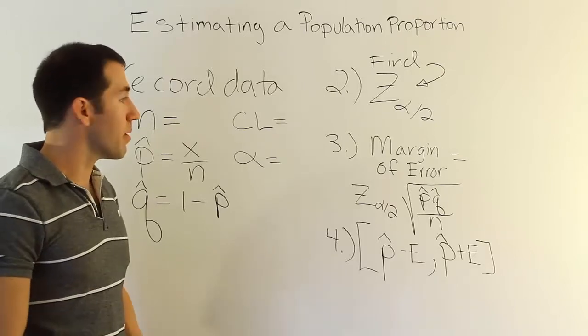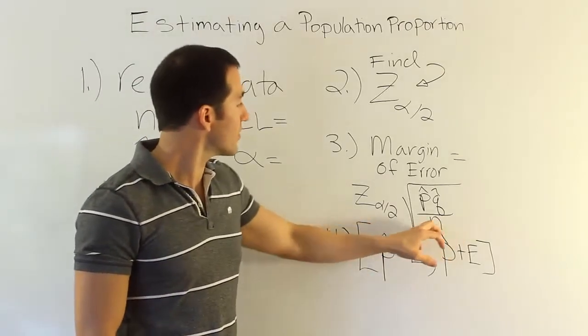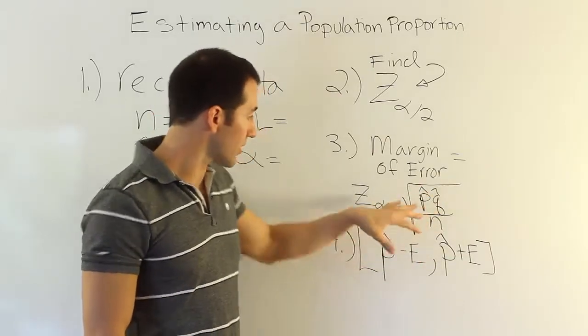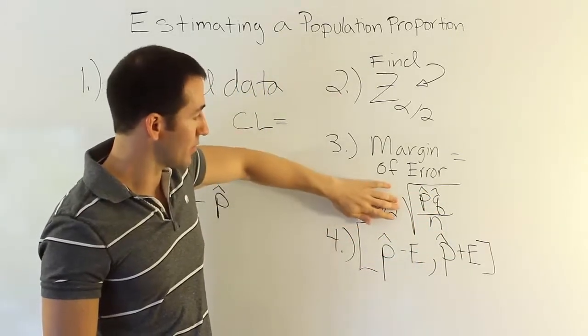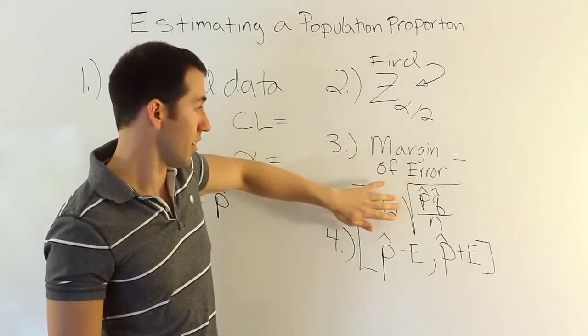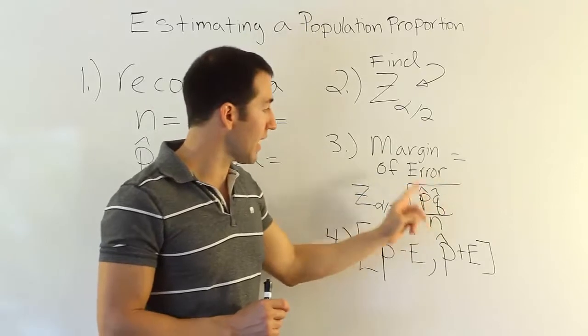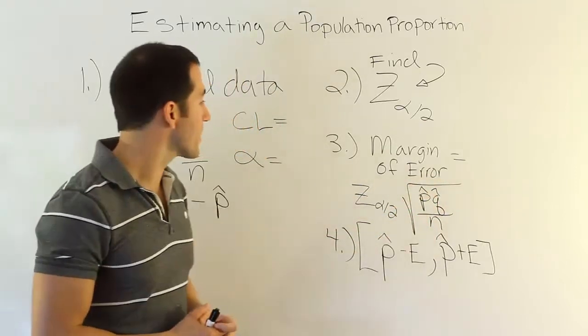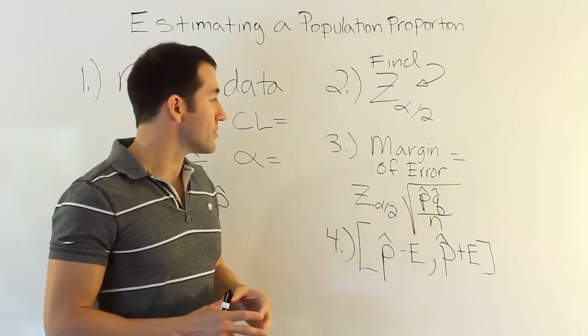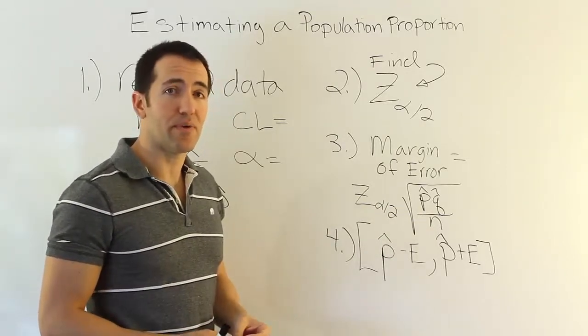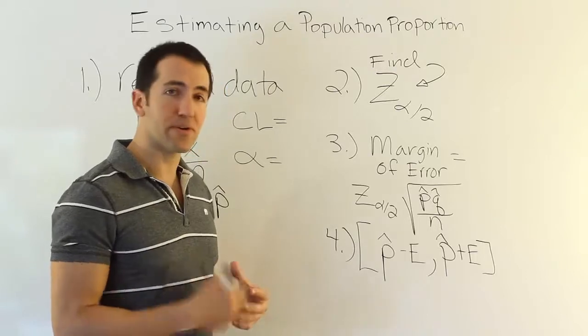One thing I want to talk about before we leave is this quantity here. This quantity is called the standard error of p-hat. So this square root part, not the z-alpha divided by two. By adding that in, you get the margin of error. If you want to do the standard error for p-hat, it's the square root of p-hat times q-hat divided by n. This is why I want to mention this, because a lot of people take statistics and never know what a standard error is. They have no concept of what that means. So I just want to make sure you understand what it means.